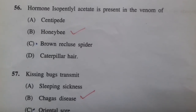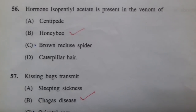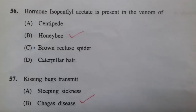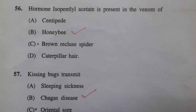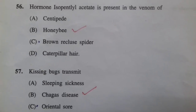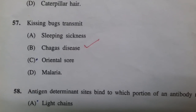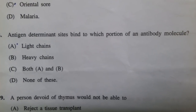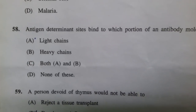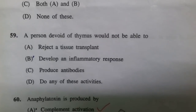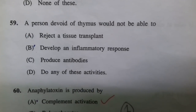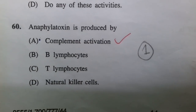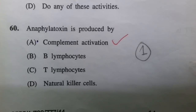The hormone isopentyl acetate is present in worker honeybees. Kissing bugs transmit Chagas disease. Antigen determinant sites bind to the light chains of the antibody molecule. A person devoid of thymus would not be able to develop a proper immune response. Anaphylatoxin is produced by complement activation.